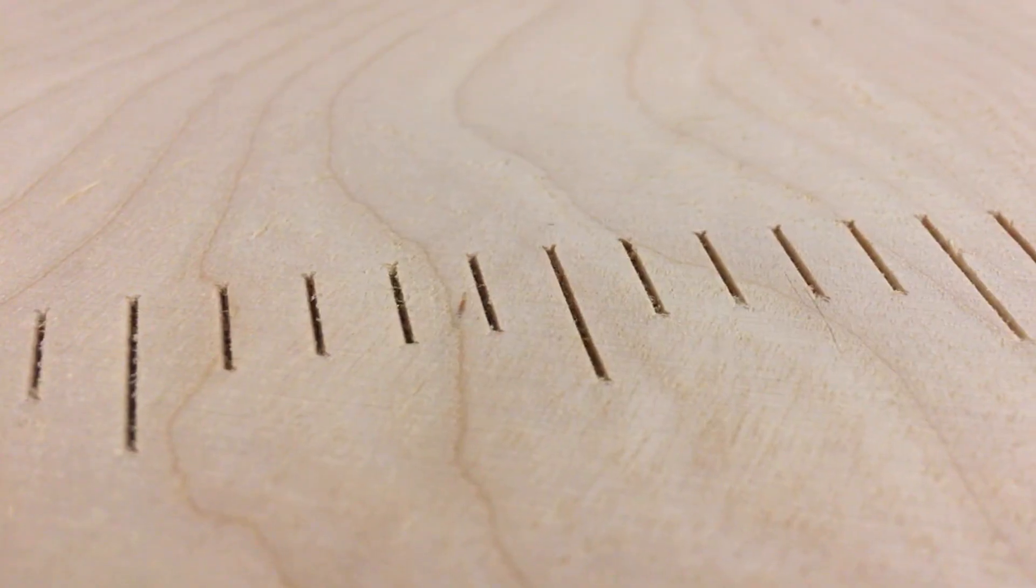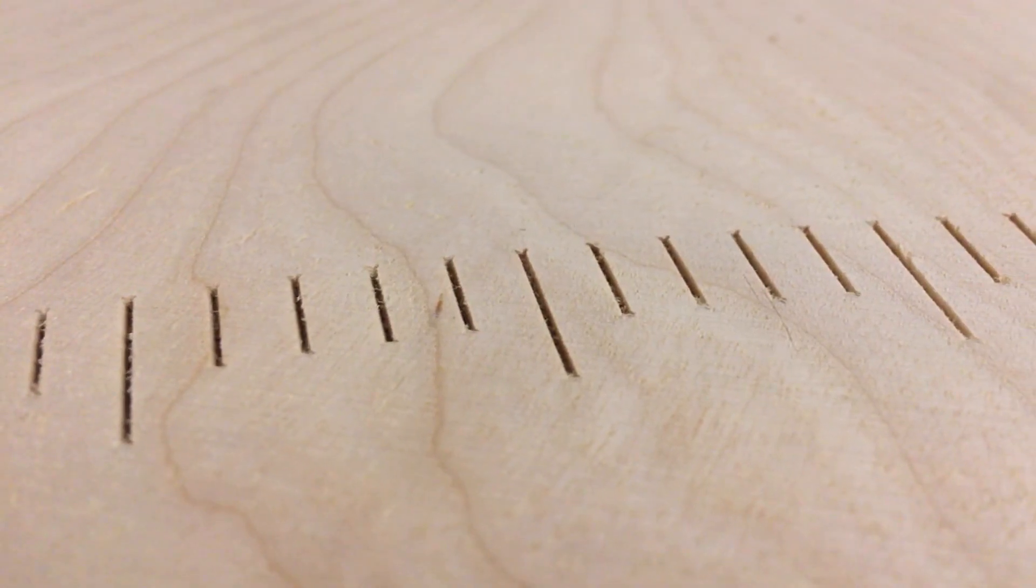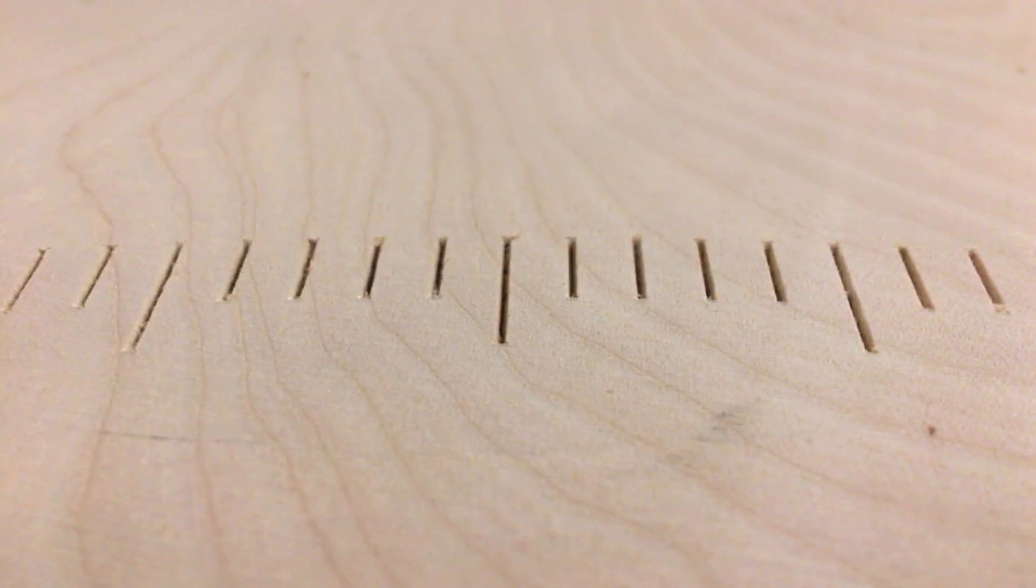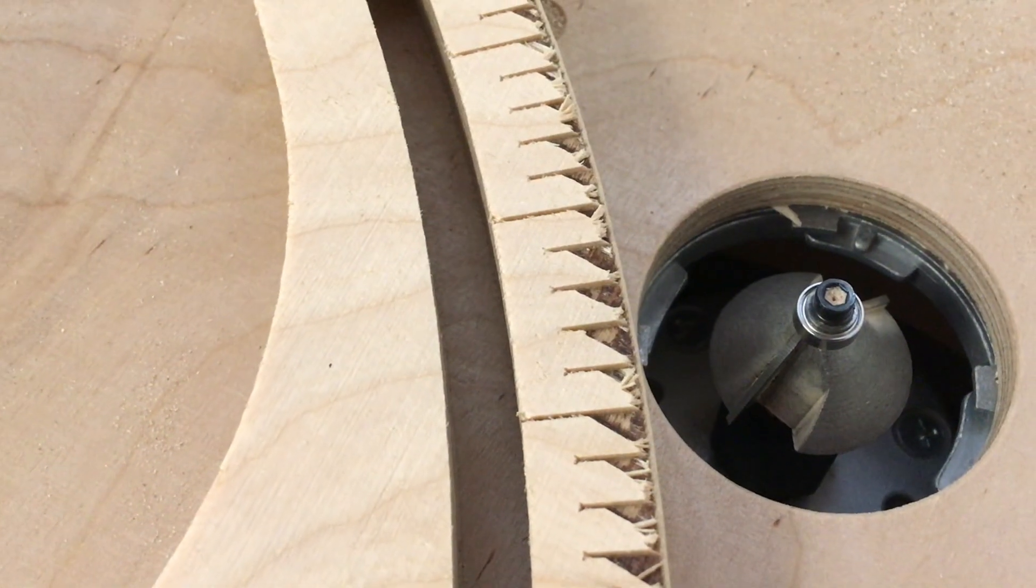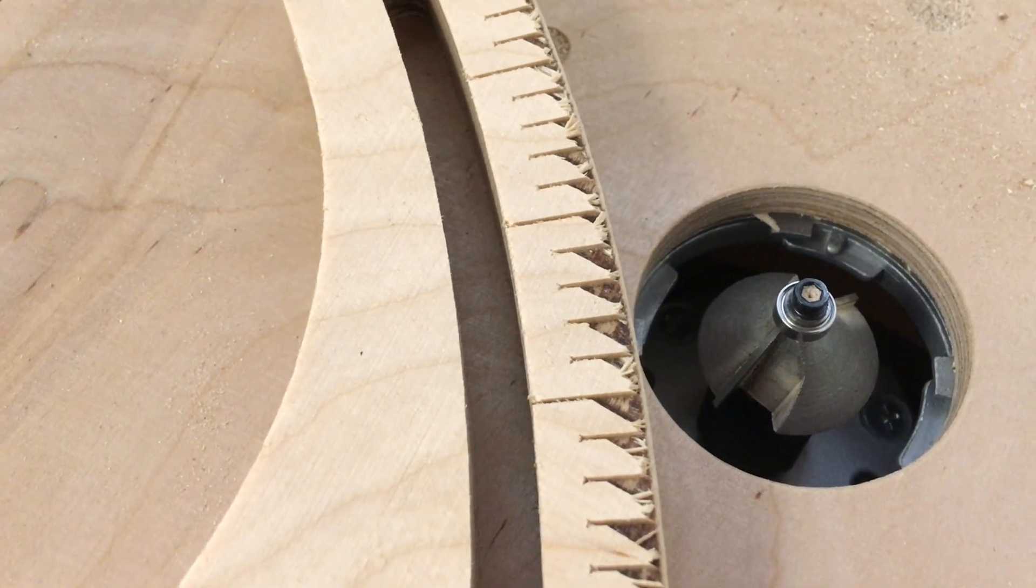When making the adjustable miter gauge component I made a mistake that ruined the part. I had to cut the angle markings on the CNC and I wanted to trim the edges of the gauge component. The trim bit made huge tearouts between the angle markings. It looked terrible, so I had to remake the component.